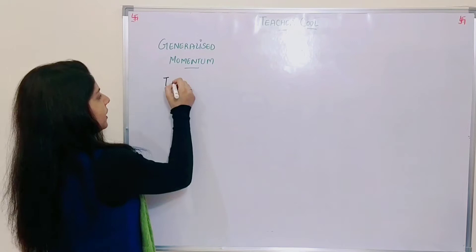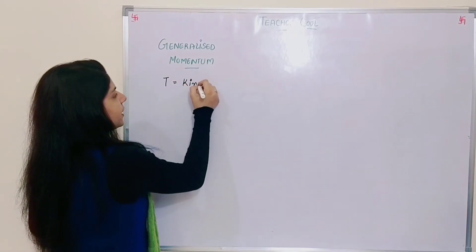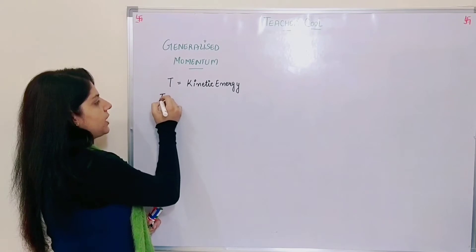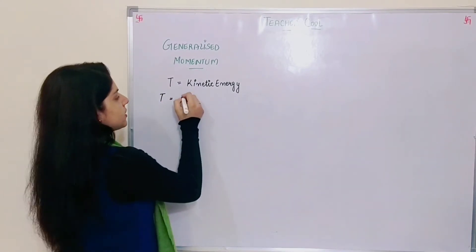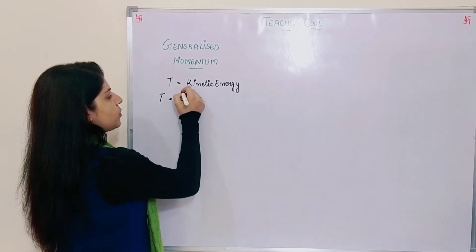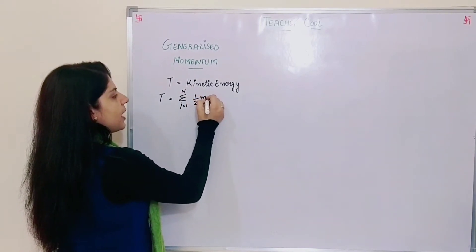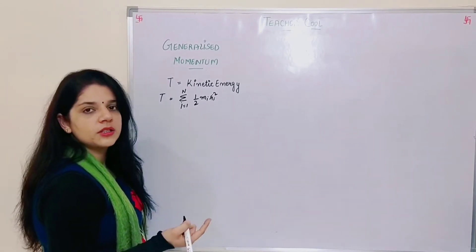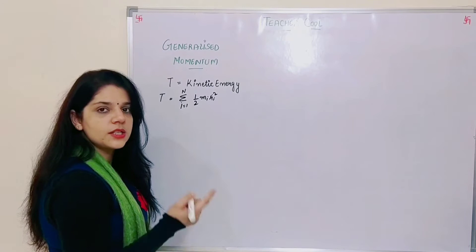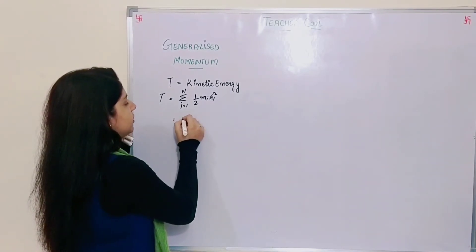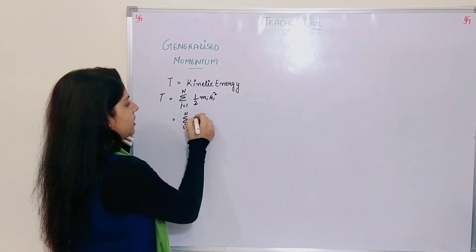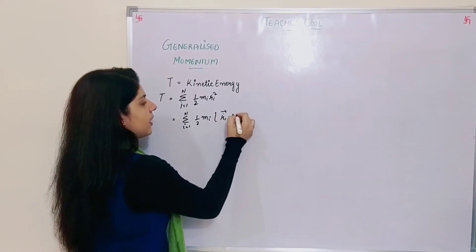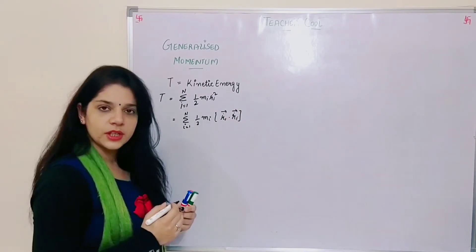What is kinetic energy? We represent it by T. I will write T is my kinetic energy, given by summation i equals 1 to n, half m_i into r_i dot square. R_i dot is my velocity, and the expression for kinetic energy is half mv square. I can write this as summation i equals 1 to n, half m_i, r_i dot vector into r_i dot vector.